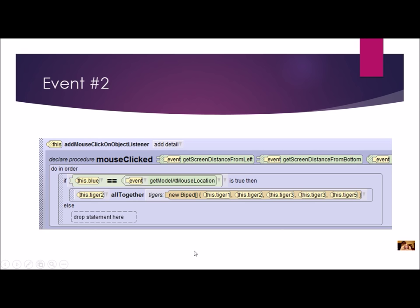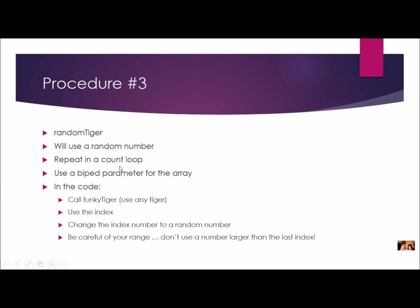Now we're ready for our third procedure — in this one we're going to choose a random tiger from our array and have it do the Funky Tiger. I'm going to use a count loop and still need the biped parameter for the array. There are just a couple more steps to get to the random number. One thing to be careful of: when setting your range for random numbers, don't use a number larger than the last index. If I have five items, I can't pick a number between one and six because there is no index six — you will get an error.